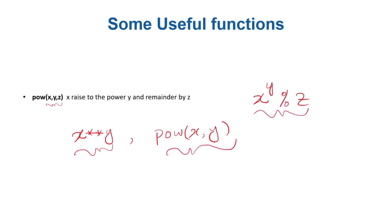In this video we saw the isinstance function and the pow function. In the next video we will see one more function that allows you to take input from the user. So far we've been supplying values by assigning them directly to variables, but next we'll see a function that lets you give values from the keyboard at runtime.